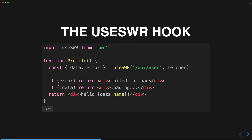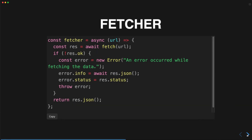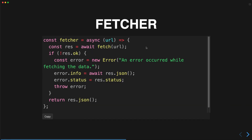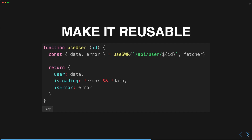To show some examples, we have a profile component that calls a user endpoint to get user data. If there's an error it displays the error, if it's loading it displays loading, and on success it displays the component. You can also define a custom fetcher if you want to use Axios or the native fetch API.